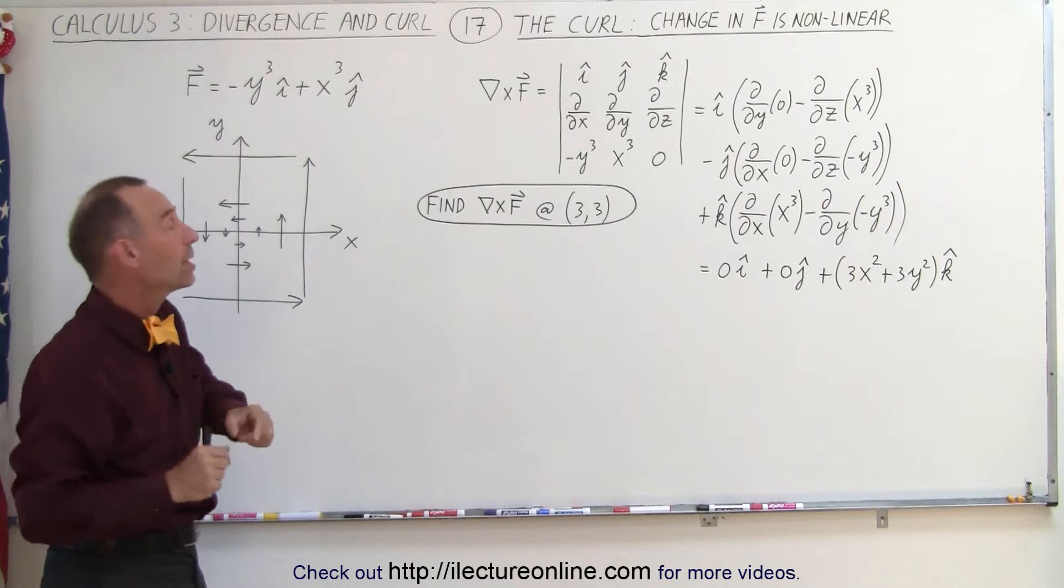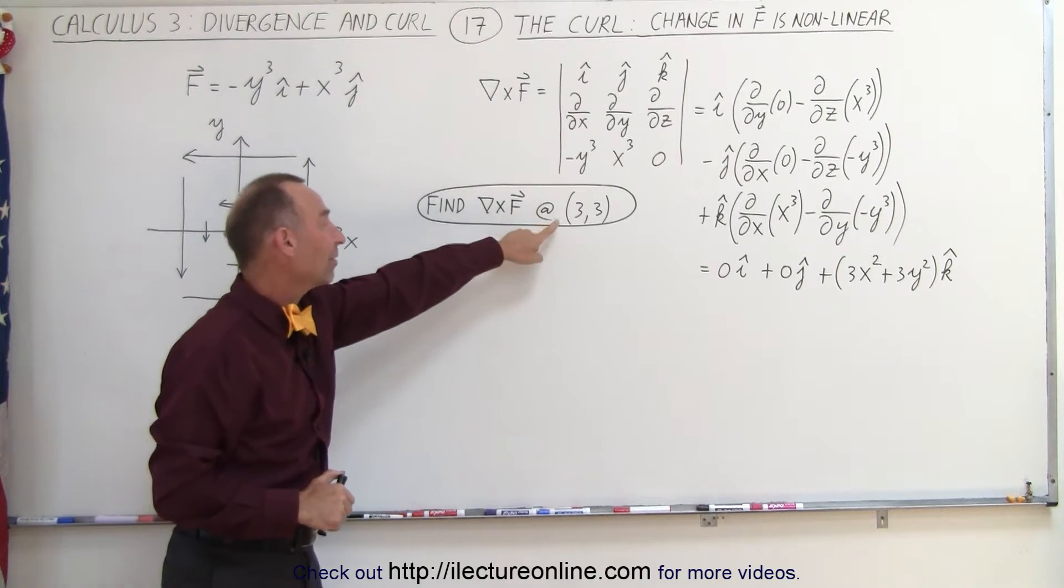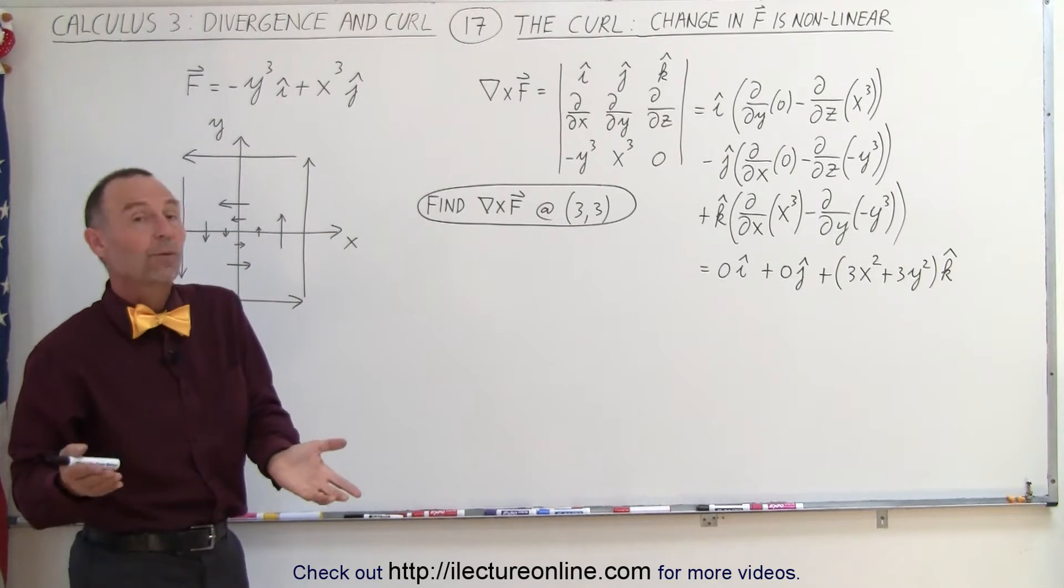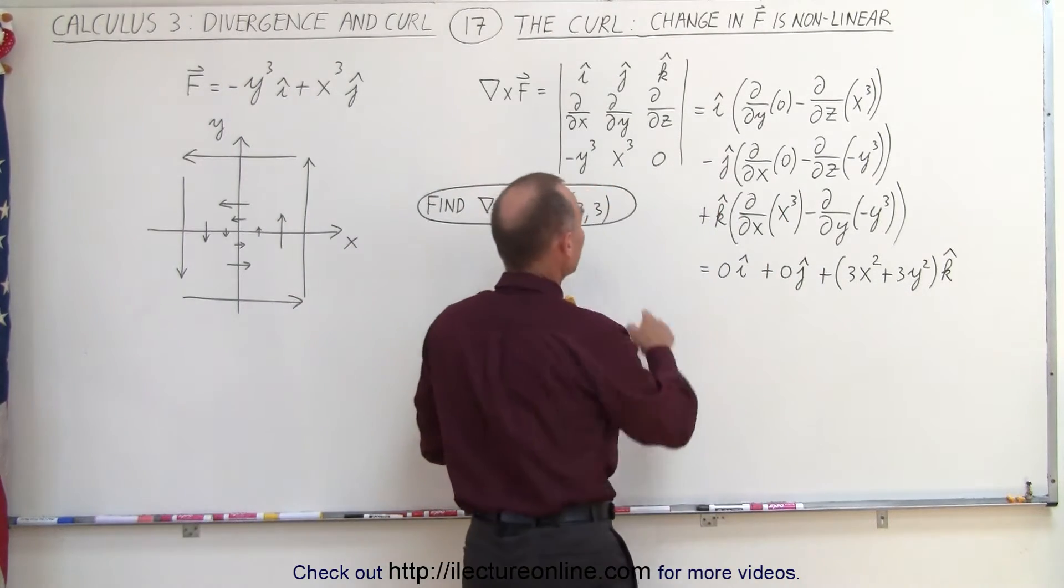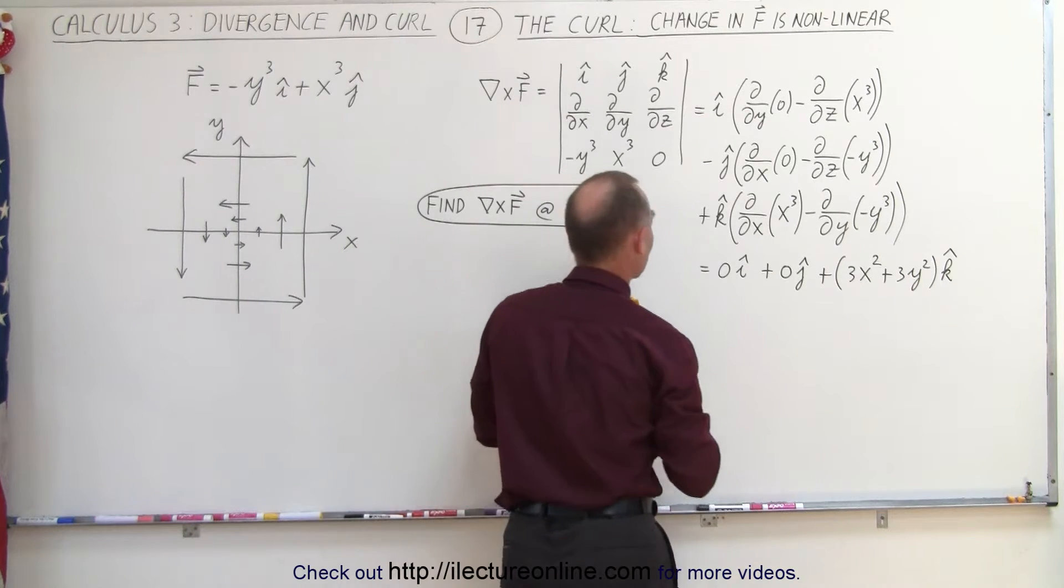So what we're going to do here is find the vector field at 3, 3, when x equals 3 and y equals 3. Since we already have an equation that tells us what the vector field is, all we have to do is plug in the values for 3 and 3.